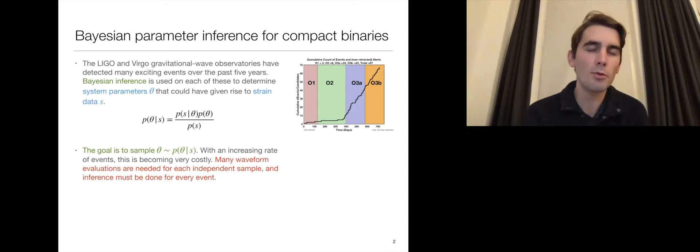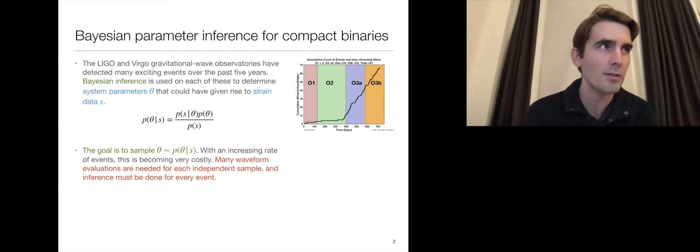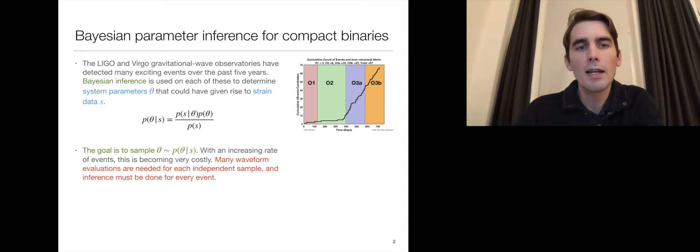Just to set some background, the LIGO and Virgo gravitational wave observatories have detected many events over the past five years. Each of these is analyzed using Bayesian inference to determine which system parameters could have given rise to the strain data observed in the detector. The goal is basically to draw samples from the posterior distribution over the parameters. This is given using Bayes' theorem in terms of a likelihood based on assumptions about stationary Gaussian detector noise and the prior distribution over the parameters.